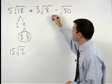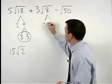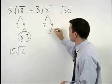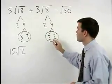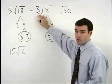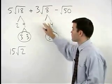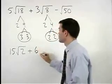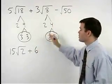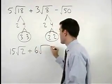In the second term, 8 factors as 2 times 4, and 4 is 2 times 2. So a 2 comes out, which multiplies by the 3 that's already out there, to give us 2 times 3, or 6, and again we're left with a 2 inside the radical.